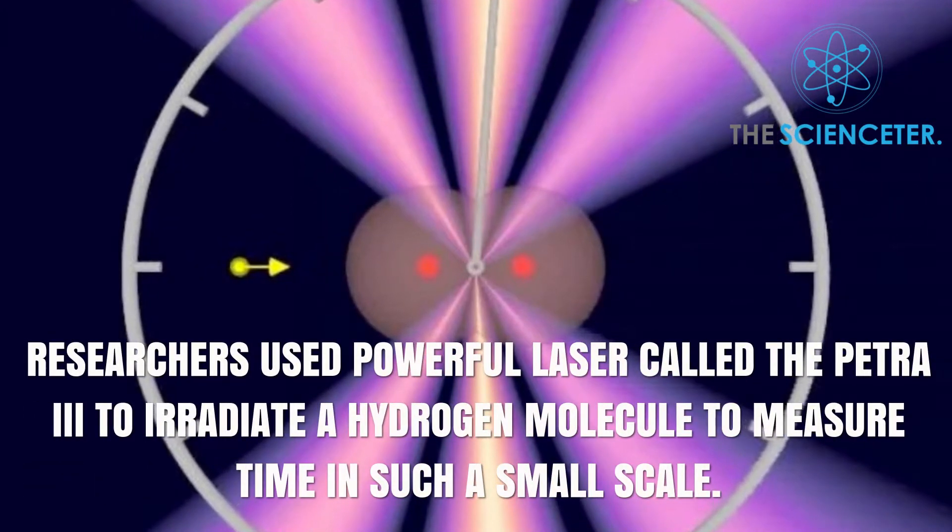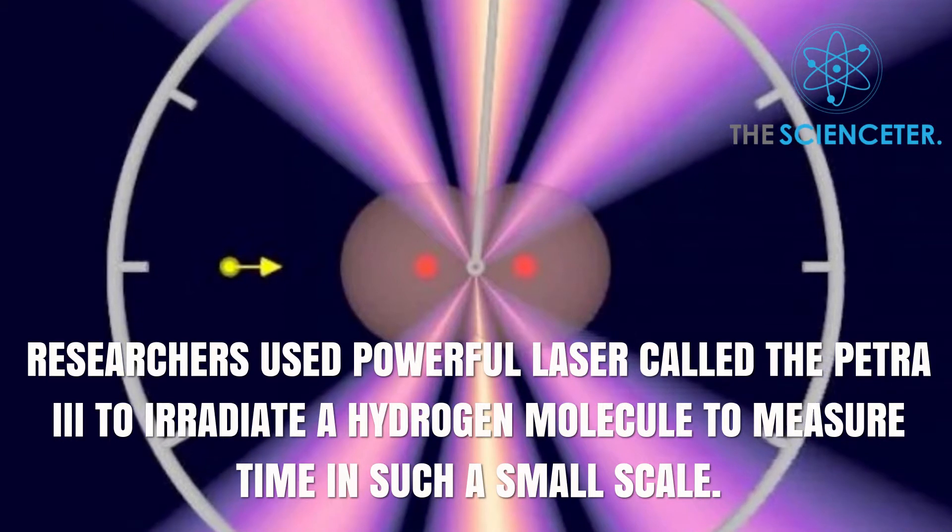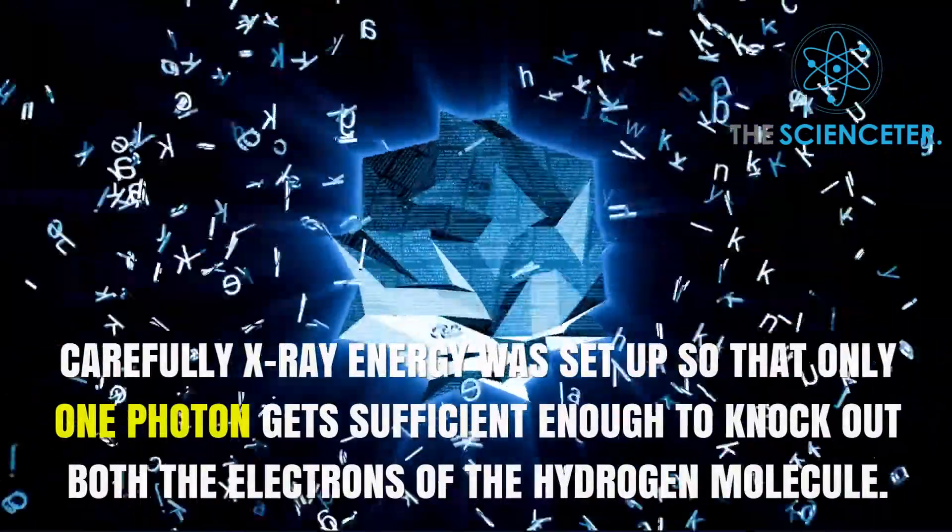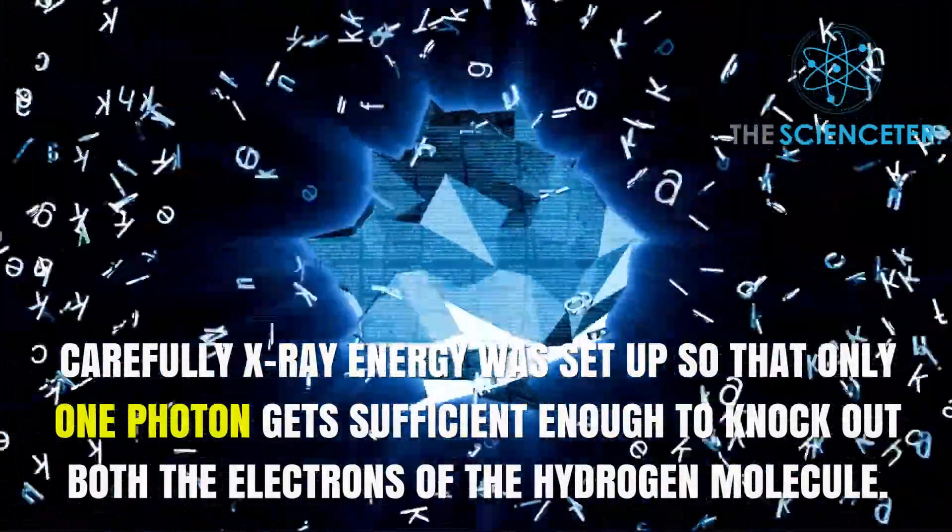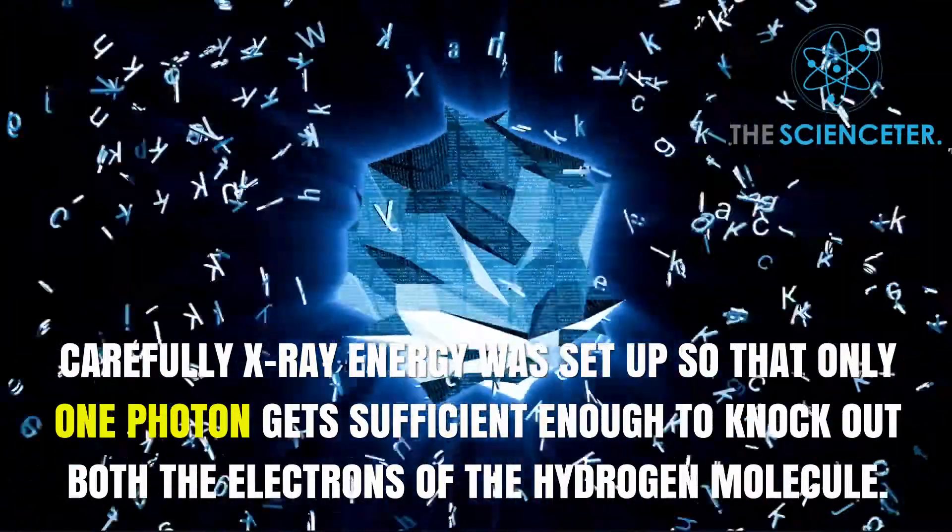Researchers used powerful laser called the PETRA-3 to irradiate a hydrogen molecule for measuring time in such a small scale. X-ray energy was set so that only one photon can knock out both the electrons of the hydrogen molecule.